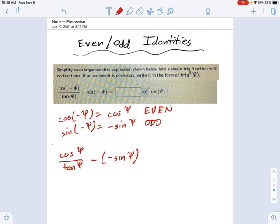So if I simplify a little more, I could turn those negatives into a positive. But where I really want to go next is that tangent function. I know that tangent of psi is equal to sine of psi over cosine of psi, right? That is the quotient identity. So let's use that one also.